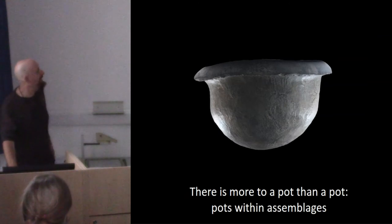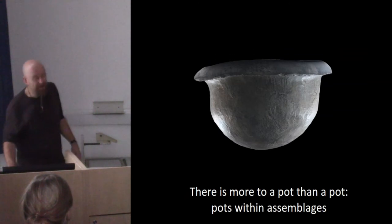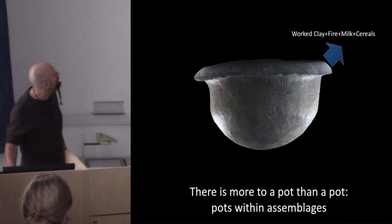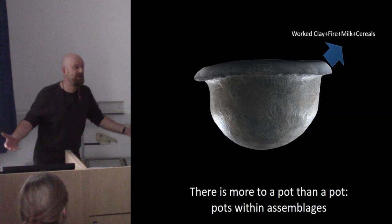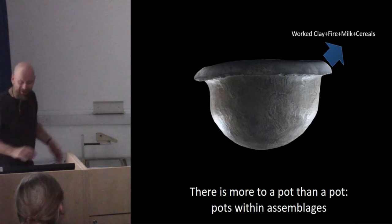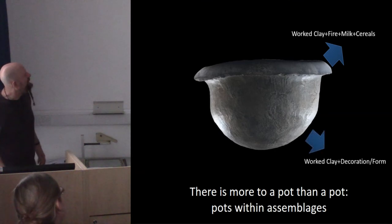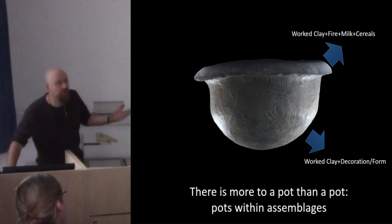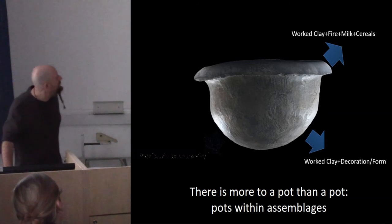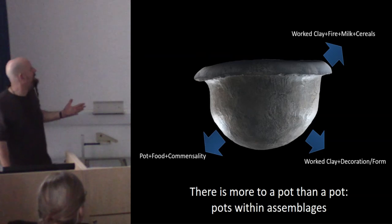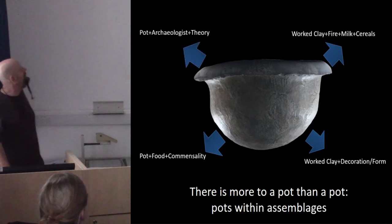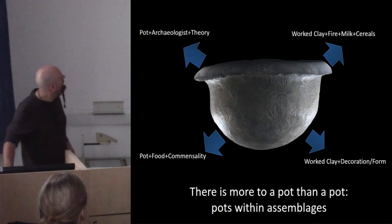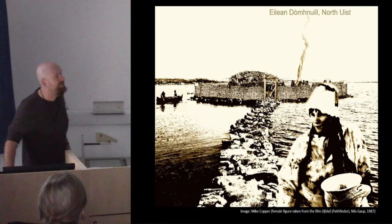Not only are the pots themselves important, but the assemblages they enter into as well: worked clay, fire, milk, cereals, porridge — a weaning food with its implications perhaps for increased fertility. We've got emergent properties coming from these assemblages, the same with worked clay, decoration and form with its semantic potential, commensality — eating together — and the social possibilities that come from that, and even the way pots enter together with archaeologists and theories in the modern world.